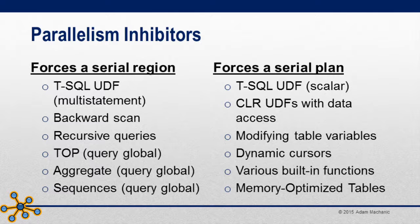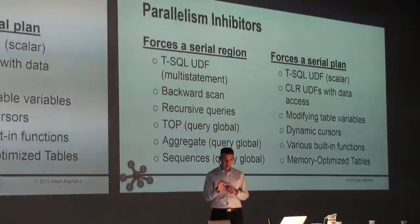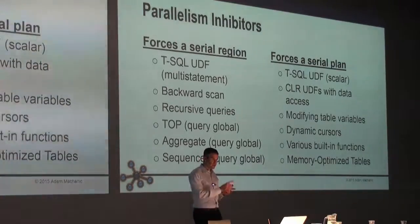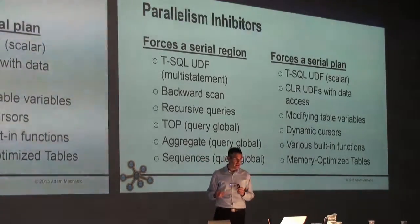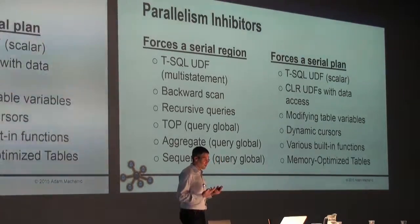Likewise, query global aggregates and sequences also force serial regions. Also, interestingly, multi-statement T-SQL UDFs — and strangely, backward scan. We already saw that there's something called a parallel scan, which in the storage engine can be done either forward or backward because the pages on disk are linked using a doubly linked list. But only forward scan is supported in parallel. The reason, I'm told, is they didn't test backward scan.